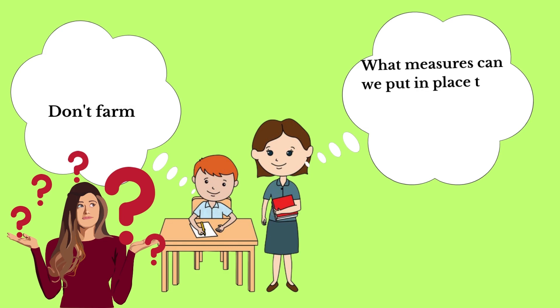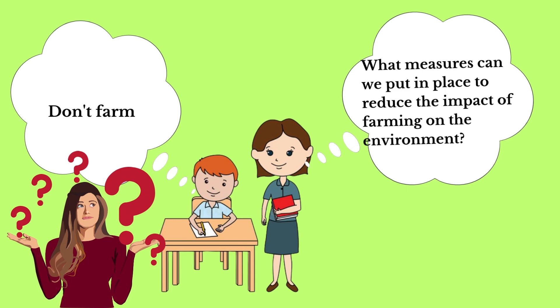Agriculture, like mining, manufacturing, fishing, and tourism, are all economic activities and are therefore central to the economy. If we simply eliminate economic activities because they are negatively impacting the environment, then what would happen to the economy as a result?